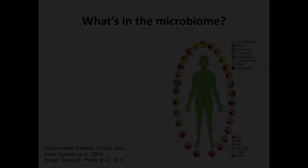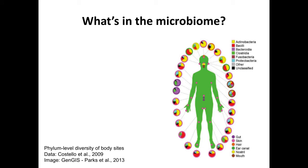Roughly speaking, there are four different general questions we can answer with microbiome studies. The first is: who's there — what's in the microbiome? This can typically be achieved using a marker gene-based study, but you can also do metagenomic shotgun sequencing and infer taxonomic information from the shotgun data, and we'll talk about that in module four.